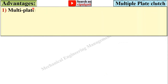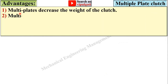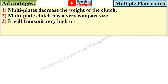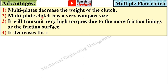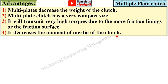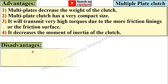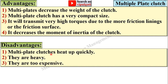Advantages of the multiple plate clutch: multiple plates decrease the weight of the clutch; it has a very compact size; it can transmit very high torque due to more friction linings; and it decreases the moment of inertia of the clutch. Disadvantages: multi plate clutches heat up quickly, they are heavy, and they are too expensive.